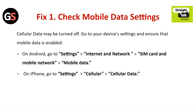Fix 1: Check mobile data settings. Cellular data may be turned off. Go to the device settings and ensure that your mobile data is enabled. On Android, go to Settings, then Internet and Network. Click on SIM card and mobile network, and then check mobile data.